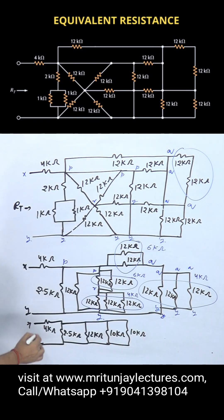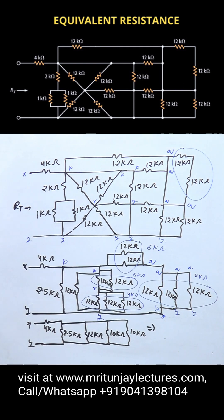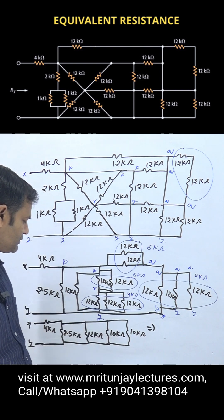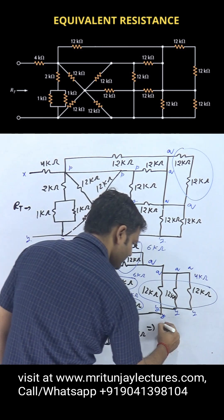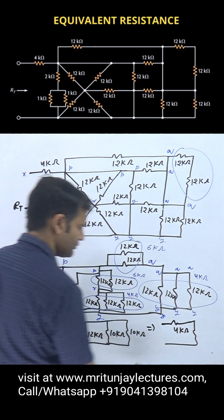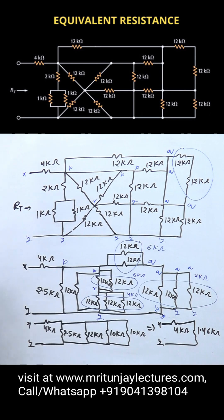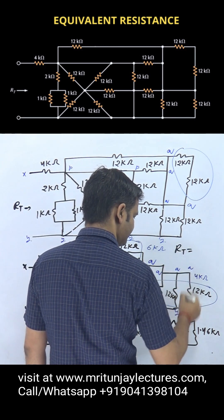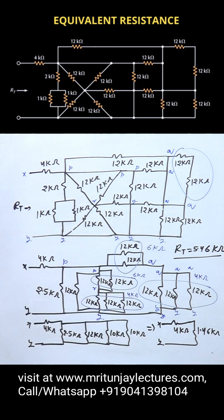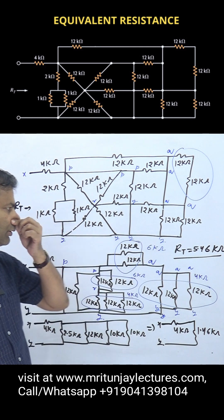Here x, here y. So next target is combination of these four. Both are parallel: 5.45 into 2.5 — finally we got 4 kilo ohm. Combination of these four we got 1.46 kilo ohm. So here x, here y. Rt is equal to 5.46 kilo ohm.